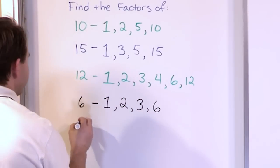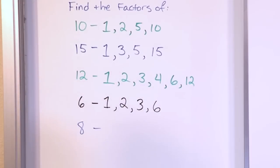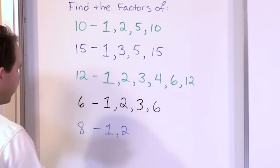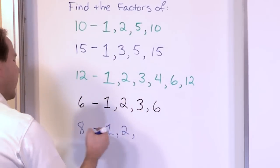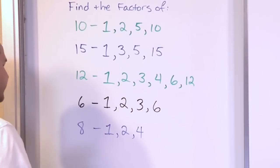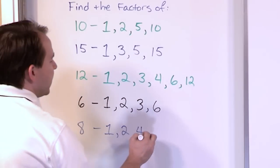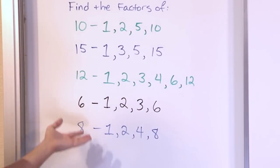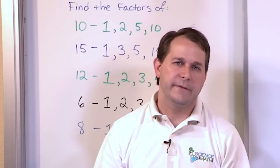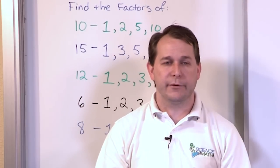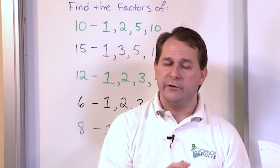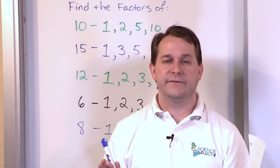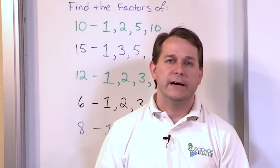For our final example, let's look at the number 8. 1 is always a factor. 2 is a factor because 2 times 4 is 8. 3 is not a factor. 4 is a factor because 4 times 2 is 8. 5, 6, and 7 are not factors. But 8 is a factor because 8 divided by 8 is 1. So make sure you understand the concept: a factor is just finding what numbers can divide into something evenly with no remainder. You start with 1, march up to the number itself, and list all factors that divide evenly.